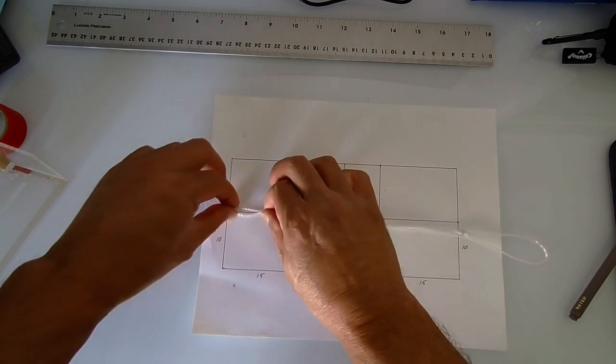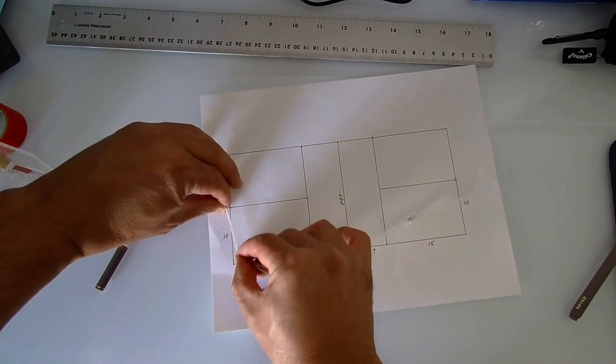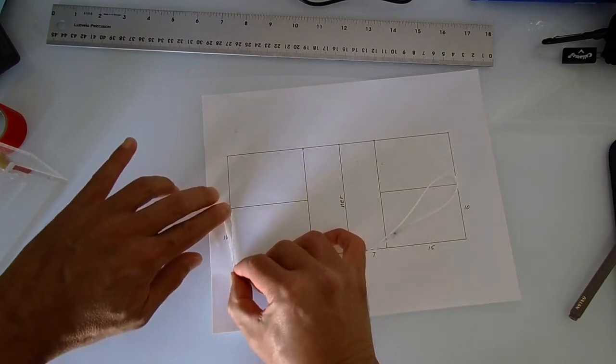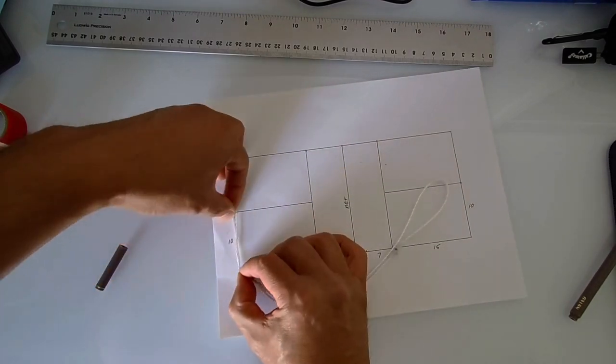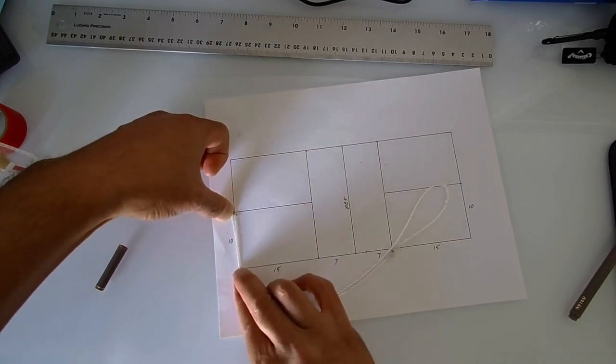So we're going to start with that end and from there we know we're going to need to go down 10 feet. So from 10 feet, I'm going to make another mark.